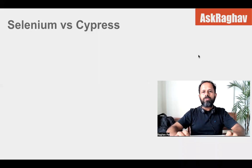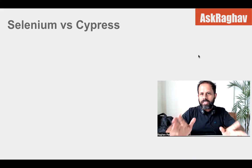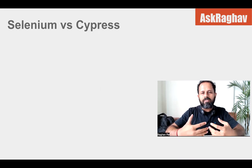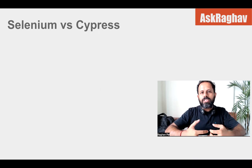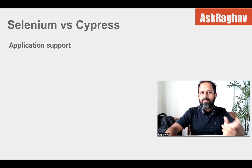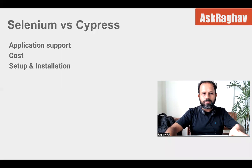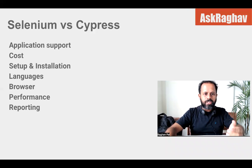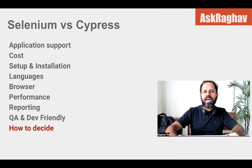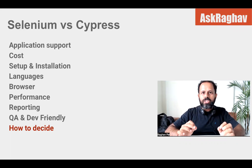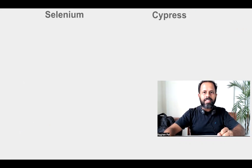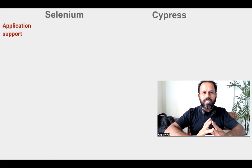Today in this session, I'm going to show you a comparison between Selenium and Cypress. I will list out all the major features that we need in any automation platform and framework, and then we will compare Selenium with Cypress to see which is better or more suited for your needs. We will cover application support, cost, setup and installation, language support, browser support, performance, reporting, which is QA and dev friendly, and finally how you can decide which platform to go with.